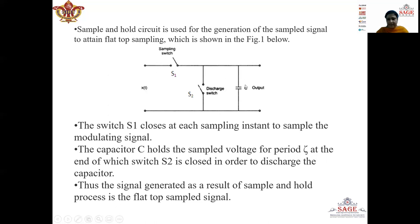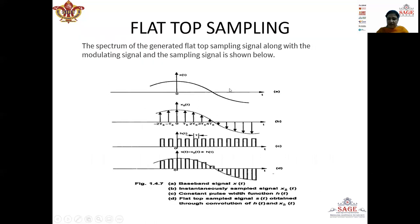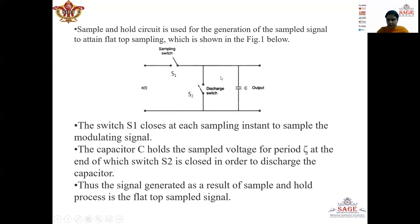The capacitor C holds the sample voltage for period tau. At the end of this period tau, which is the end of the pulse, switch S2 is closed. When switch S2 closes, the capacitor gets a path to discharge, so the capacitor will discharge through this path. Since the forward resistance of switch S2 is very low, the capacitor will instantaneously discharge to zero voltage and the pulse will go to the lower level. Thus, the signal generated as a result of this circuit is a flat top sample signal.